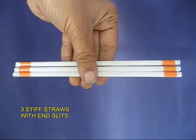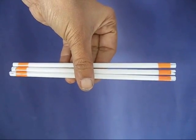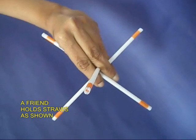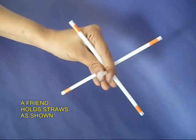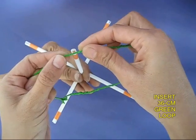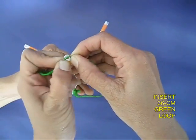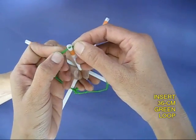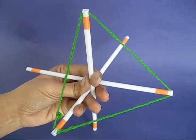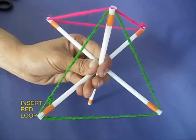These are stiff straws. Now hold them at right angles like the three axes—the x, y, and z axis—and then take the green loop of thread which is 36 cm long and insert it to make a triangle as shown.